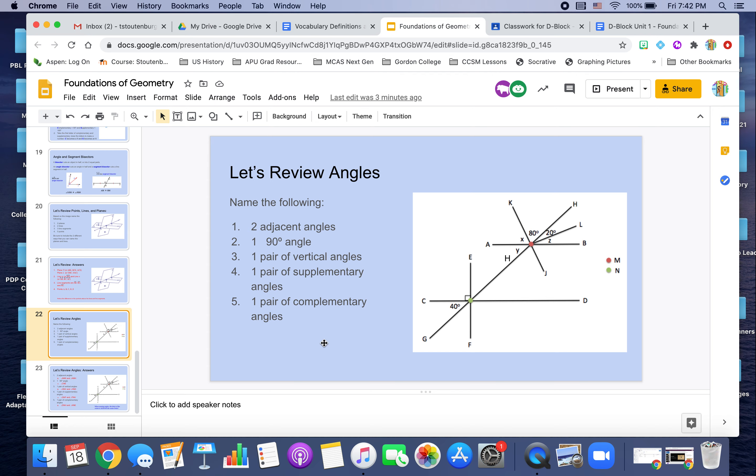All right. Let's review some angles now. Okay. Now using this diagram here, you need to identify two adjacent angles, one 90 degree angle or one right angle, a pair of vertical angles, a pair of supplementary angles and a pair of complementary angles.